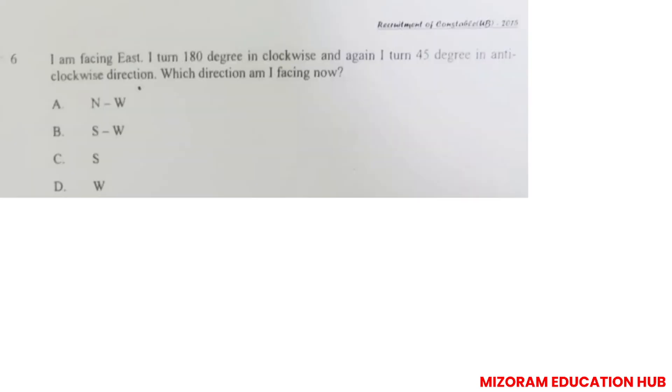I am facing east. I turned 180 degree in clockwise. 180 degrees means this will be the new direction - west. And I turned 45 degree in anti-clockwise direction. Anti-clockwise means opposite of movement. And this is 45. Which direction am I facing now? This is southwest. So option B is correct answer.